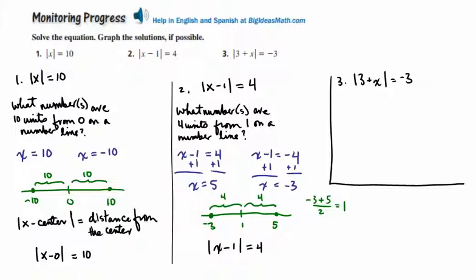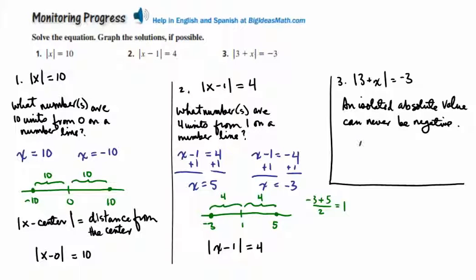With the third problem, we have absolute value of 3 plus x is equal to negative 3. As we've said repeatedly, an isolated absolute value can never be negative. So because of that, there are no solutions here. You see the isolated absolute value set equal to a negative number — we know that can't be true. No solutions.